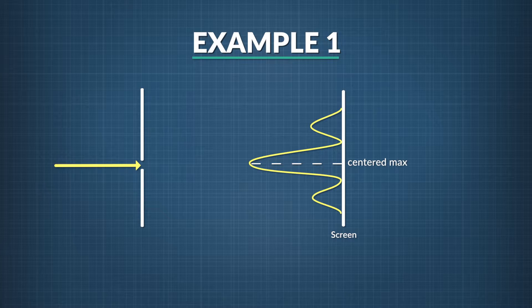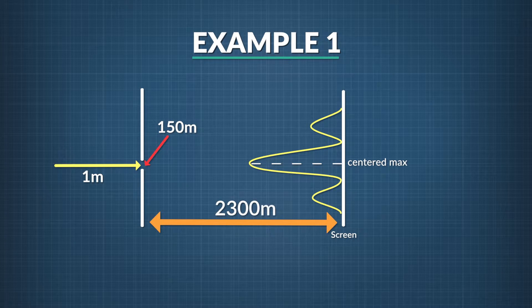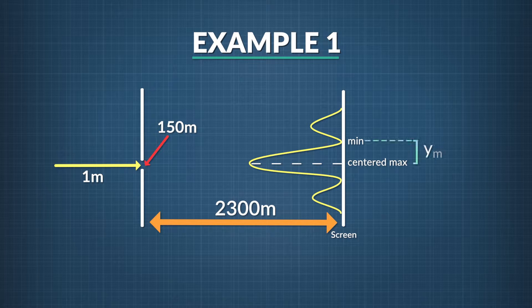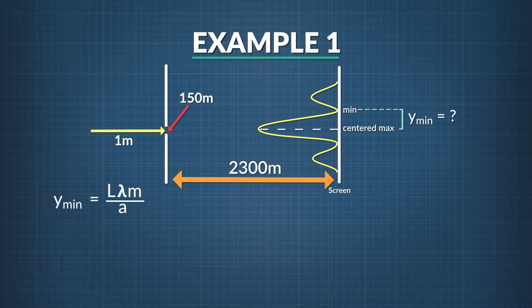For our first example, consider the single slit setup. Our wavelength is 1 meter, the slit width is 150 meters, and the backdrop is 2,300 meters behind the slit. How far above the center of the screen is the first minimum point in the pattern?